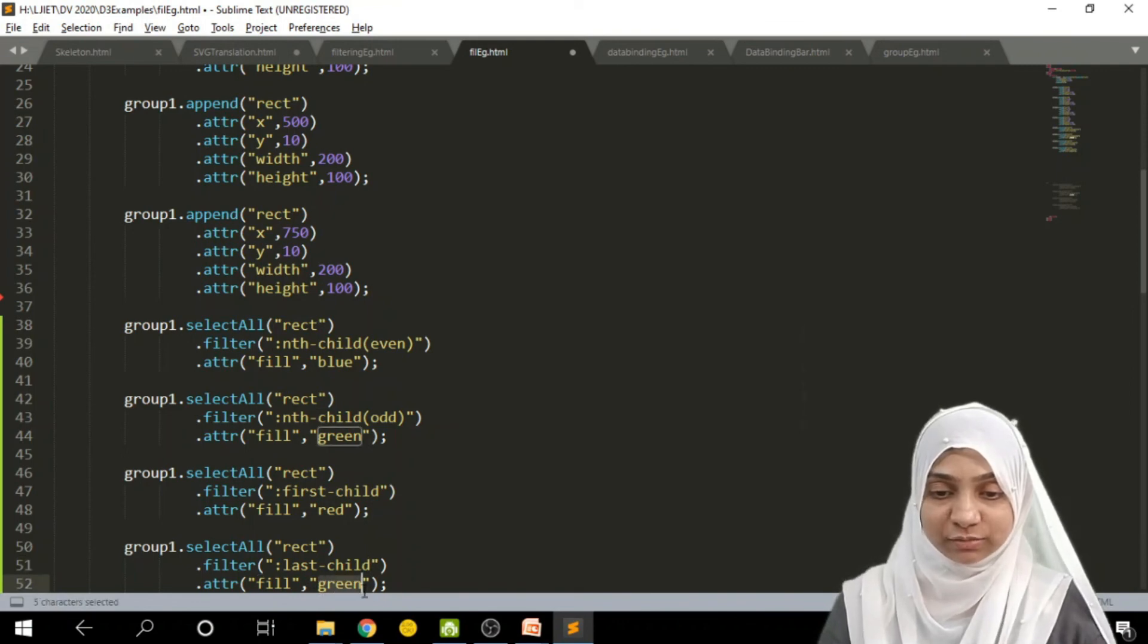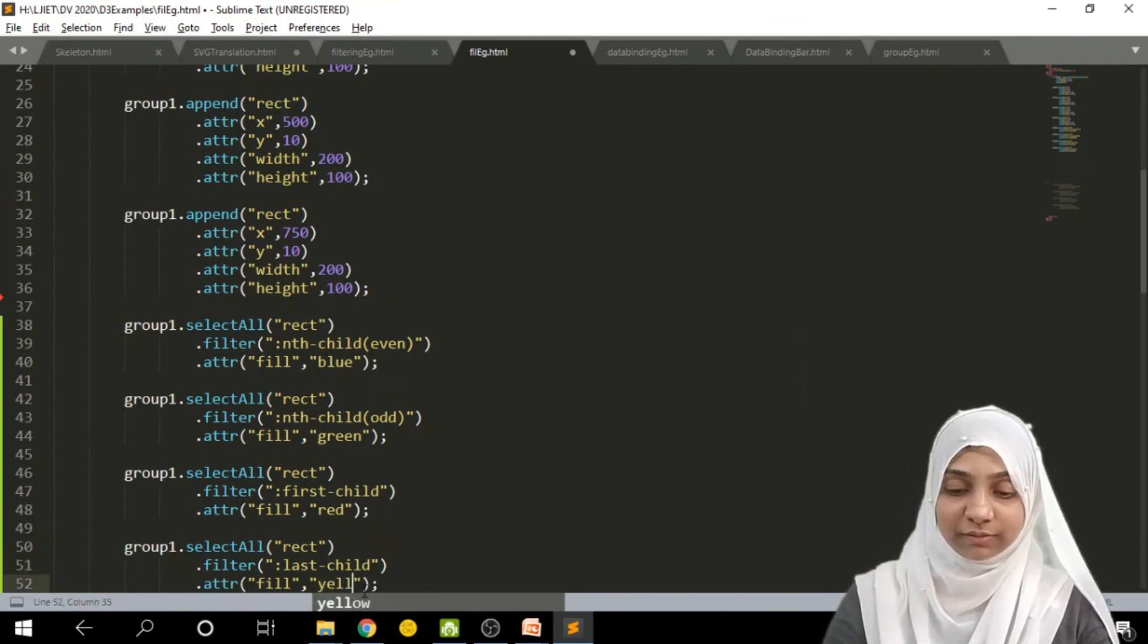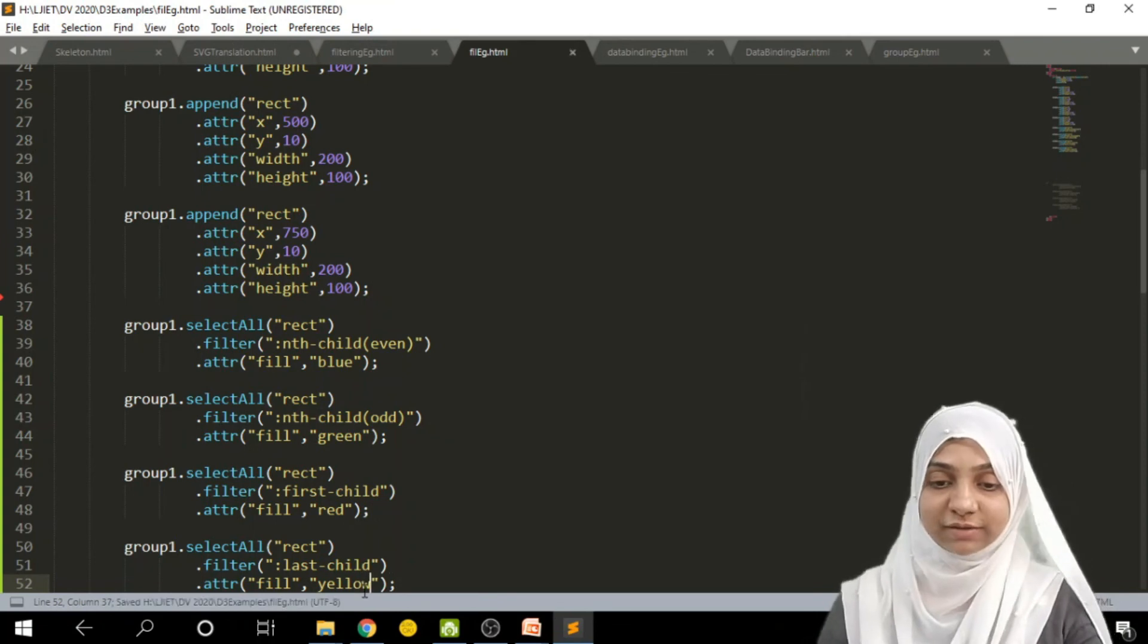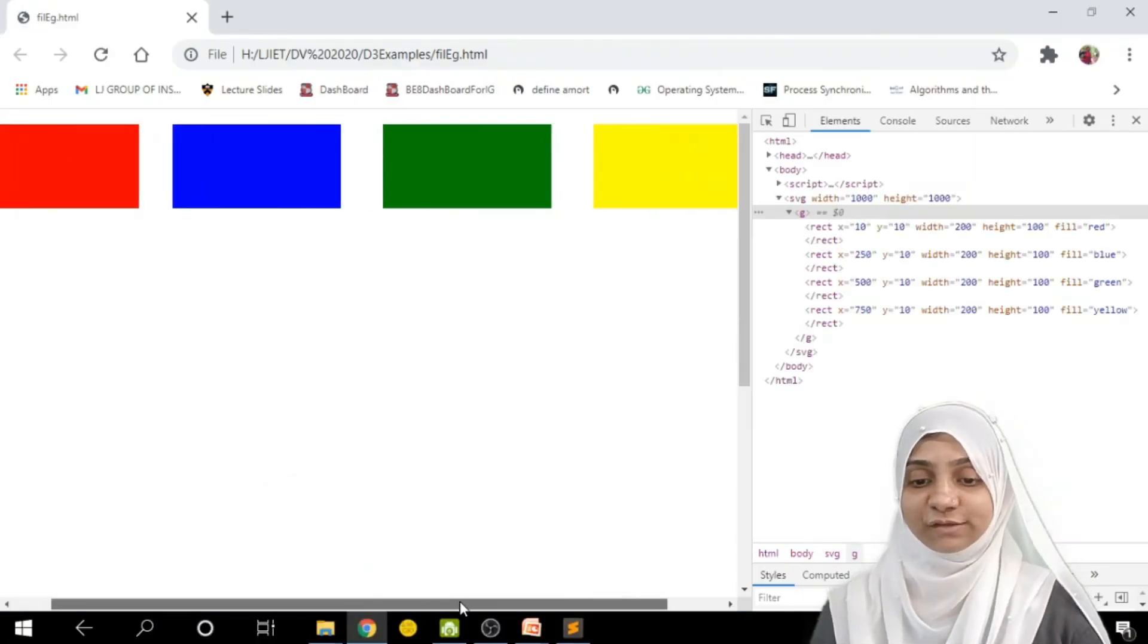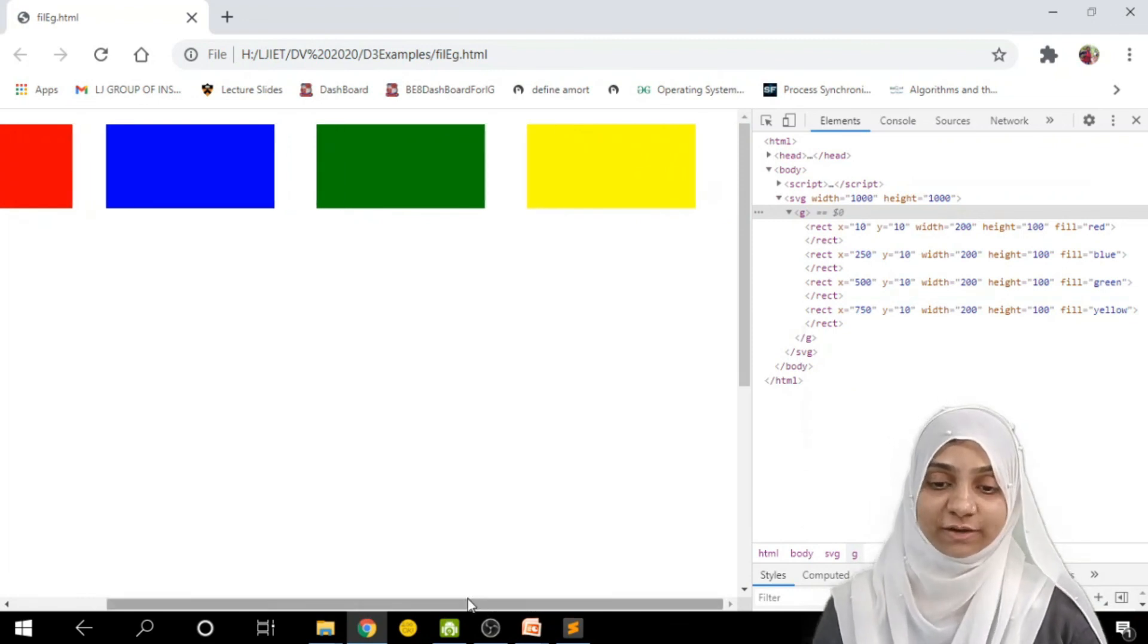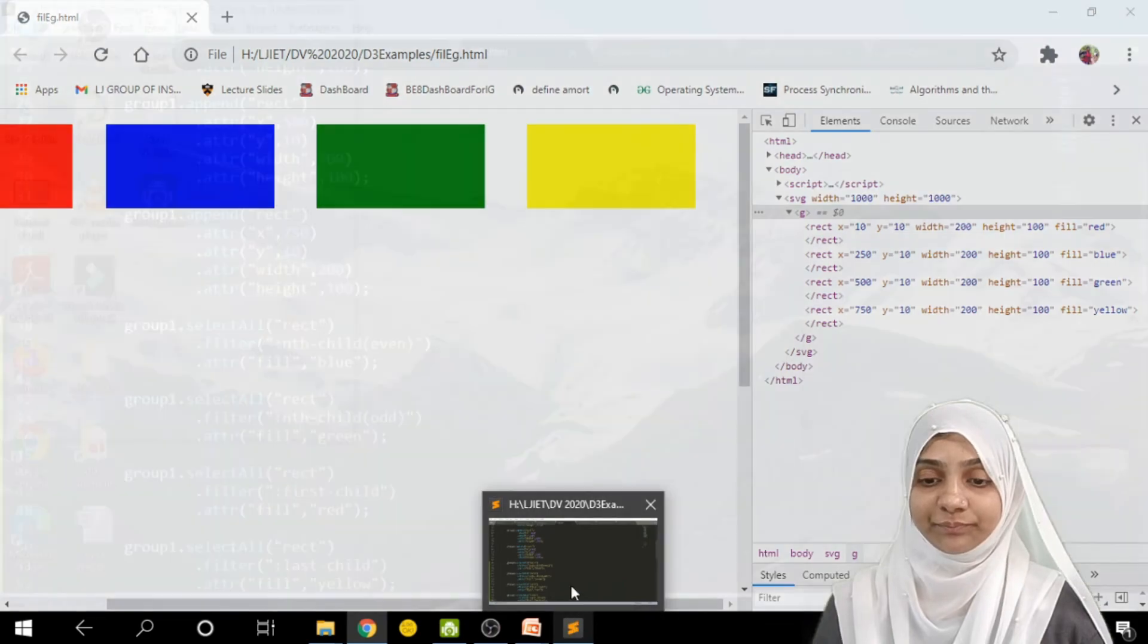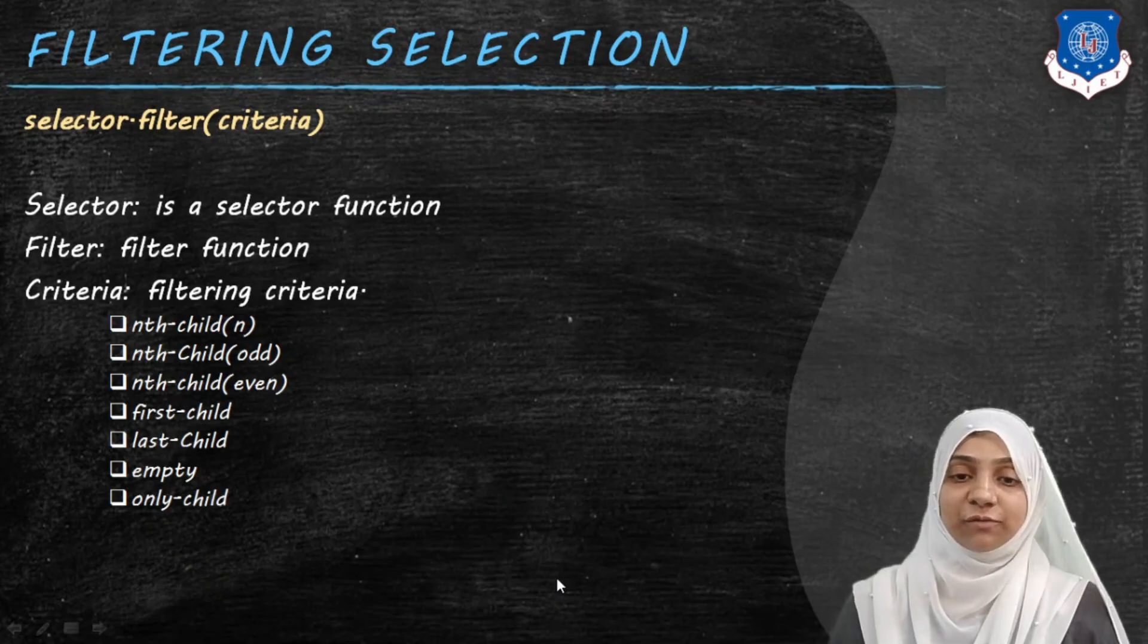Likewise I can change the color of last child also. Instead of nth child I will write down last hyphen child. As you can see, last child which is nothing but last rectangle of a group is now yellow in color.